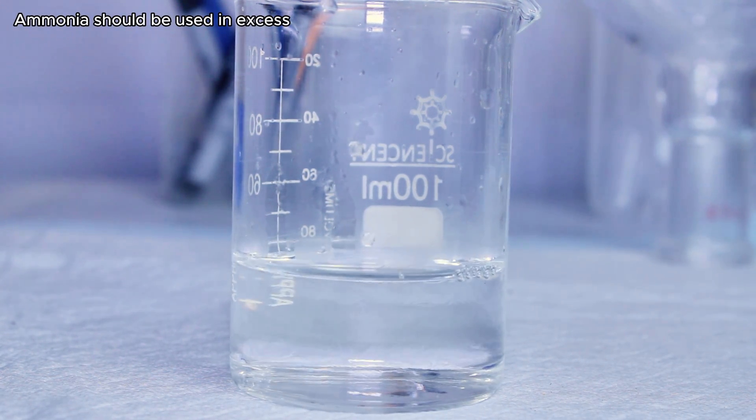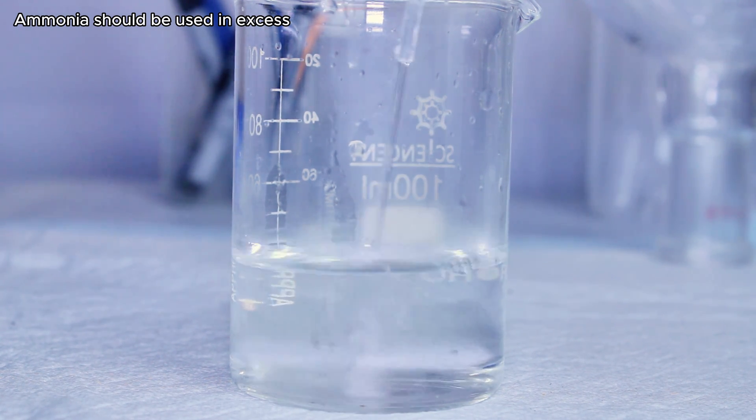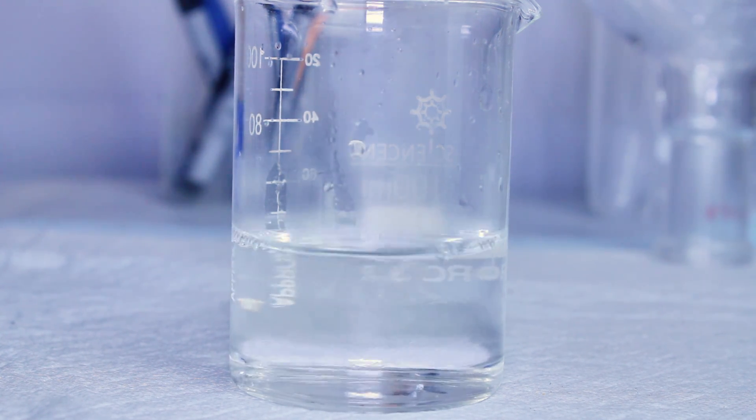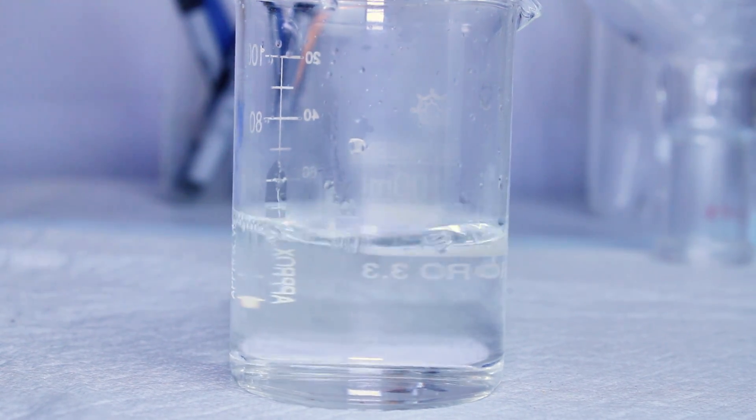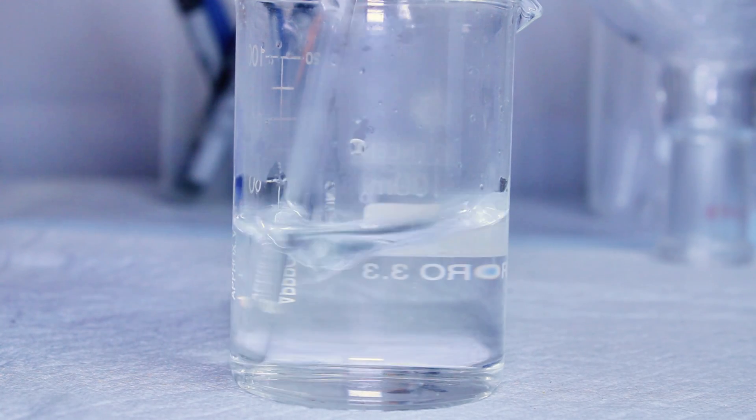Now I didn't actually measure the volume of ammonia I added, because I made this ammonia myself and I haven't titrated it yet to figure out how strong it is. With that in mind, the way that I determined that my ammonia was in excess was to just keep adding it until I could smell the ammonia at a distance without having to waft it or directly smell my beaker.